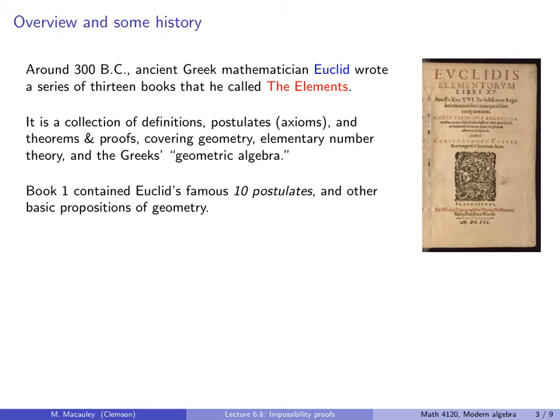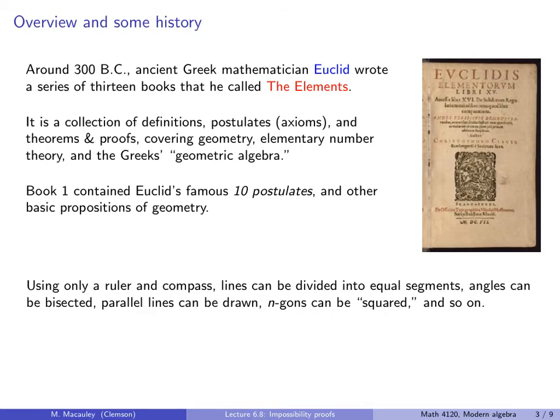Recall that the first three postulates essentially formalized ruler and compass constructions. The first postulate said that a straight line segment can always be drawn joining any two points using a ruler. The second said that any straight line segment can be extended indefinitely in a straight line. And the third said that given any straight line segment, a circle can be drawn having the segment as radius and one endpoint as center. Using only a ruler and compass, or in other words using these three postulates, lines can be divided into equal segments, angles can be bisected, parallel lines can be drawn, n-gons can be squared, and so on.